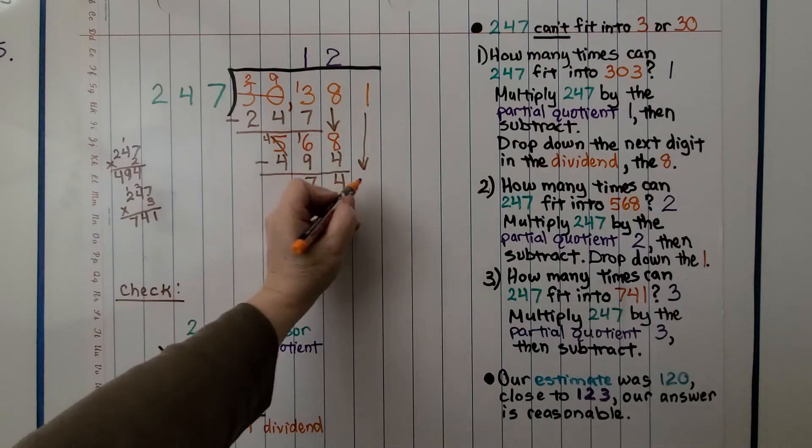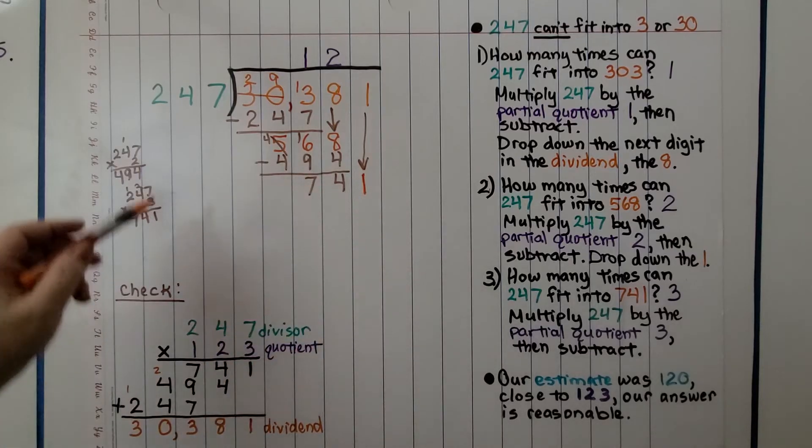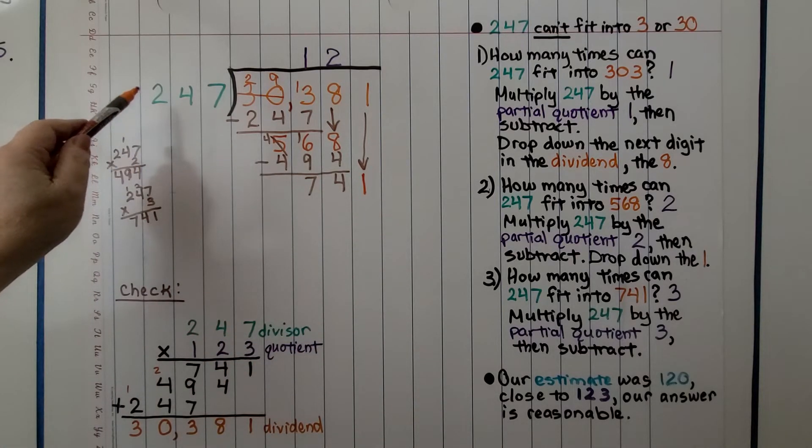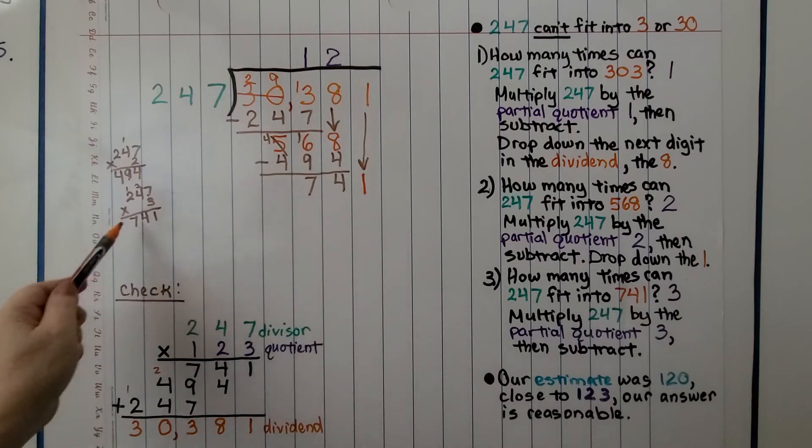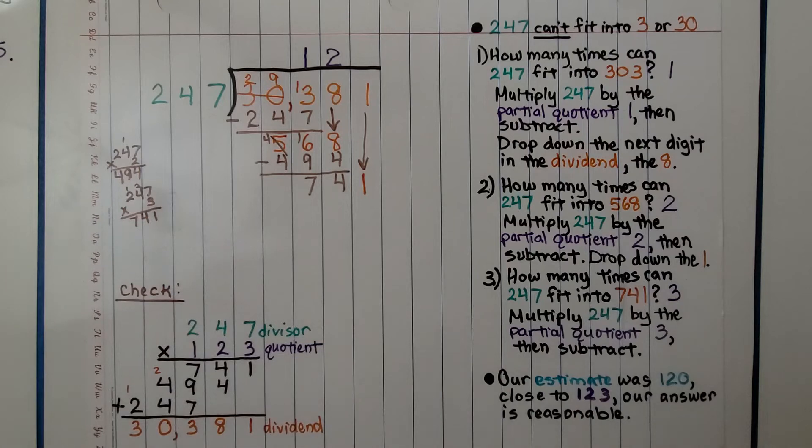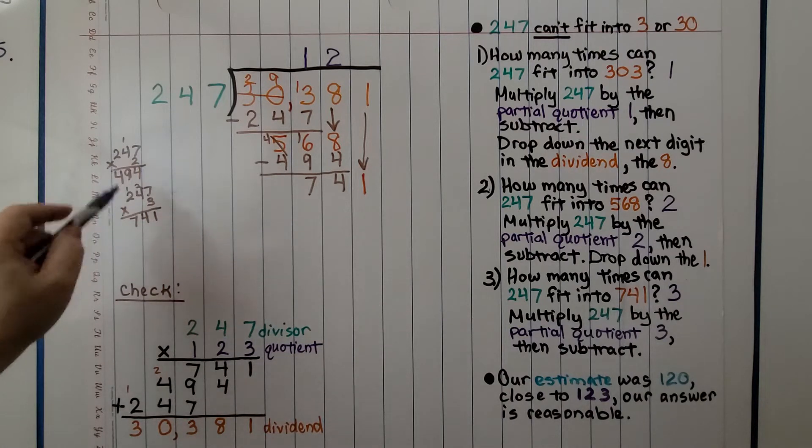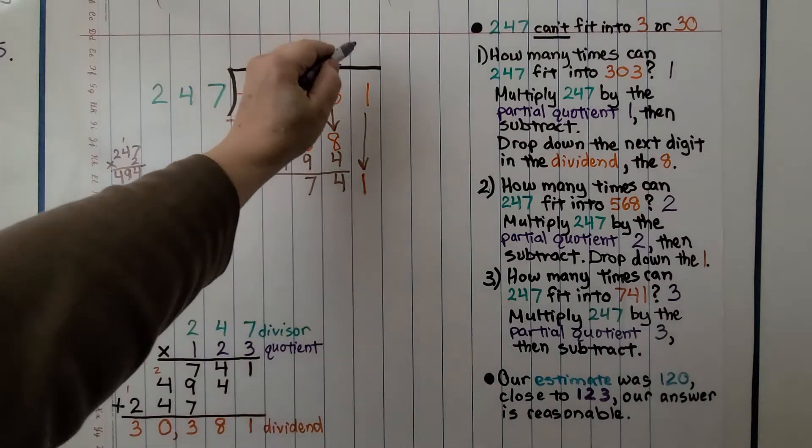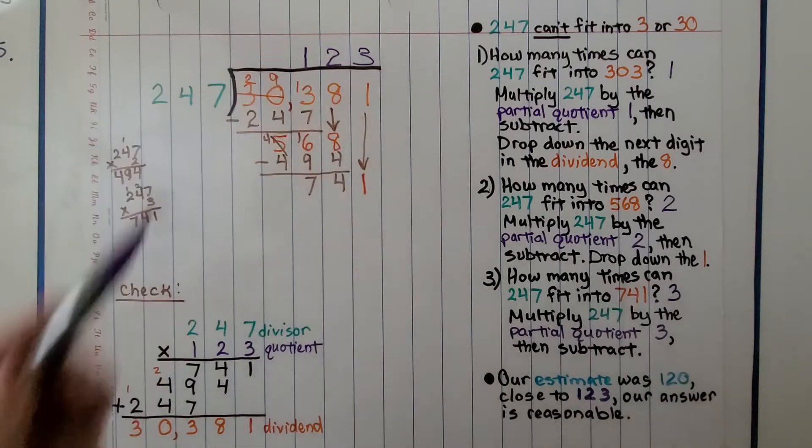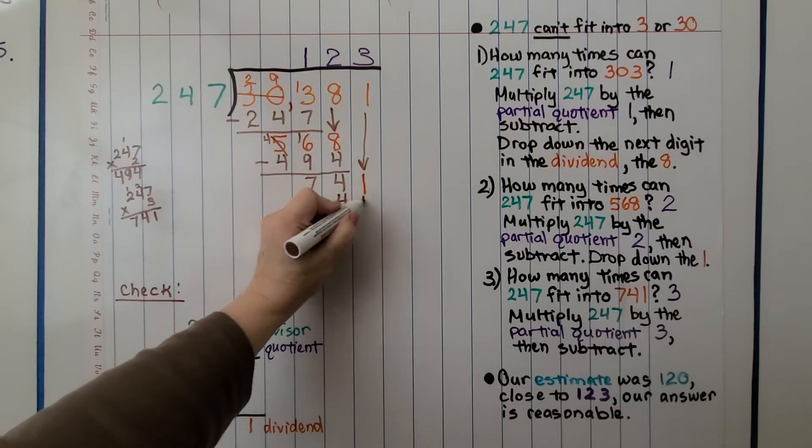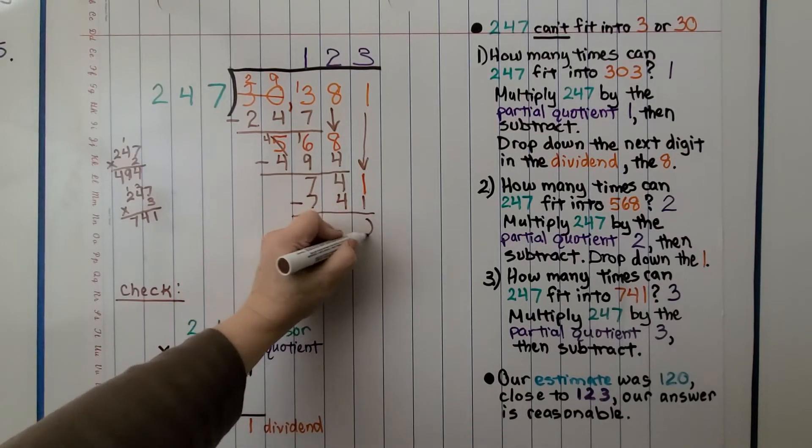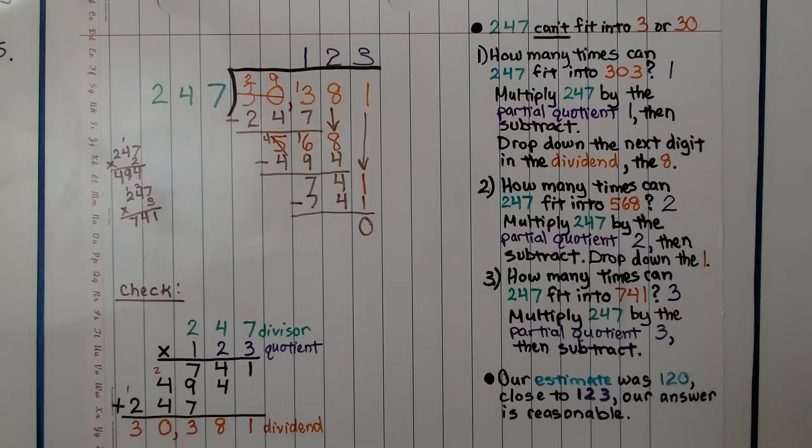So now we have 741, and we need to find how many times 247 can fit into 741. And look, we just did the multiplication on the side. We know it's 3. We know 247 times 3 is 741. So we put a 3 here and we subtract that 741. We get a 0 for a remainder. So we know the quotient is 123.